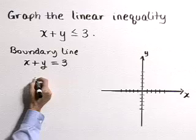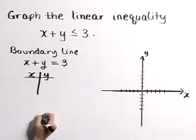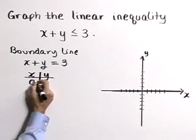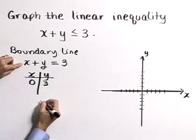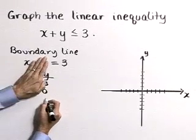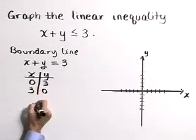Let's go ahead and do this by determining our intercepts. That'll be a pretty quick approach. If X is equal to 0 in this line, then Y is equal to 3. If Y is equal to 0, then X is 3.